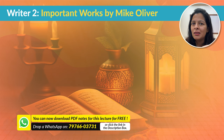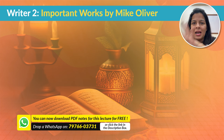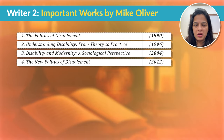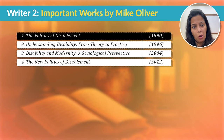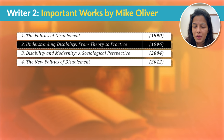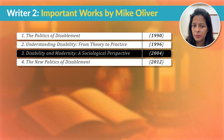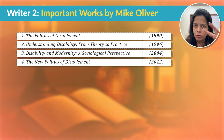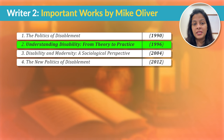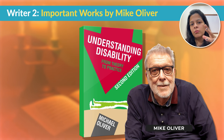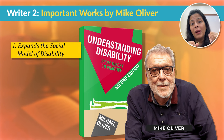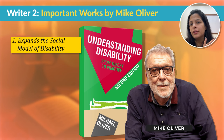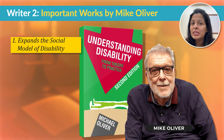In the UGC NET exam, questions mostly ask you to match works with authors, so you should know the names of Mike Oliver's works. The four major works are: 'Politics of Disablement,' 'Understanding Disability: From Theory to Practice,' 'Disability and Modernity: A Sociological Perspective,' and 'The New Politics of Disablement.' The one you should know in a little more detail is 'Understanding Disability: From Theory to Practice,' in which Mike Oliver introduces and applies the social model of disability in real life.